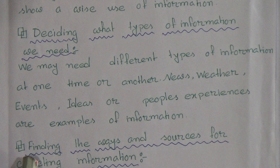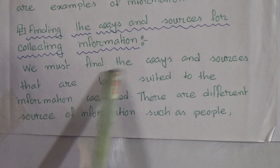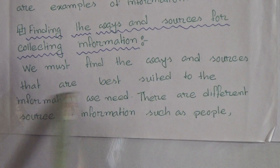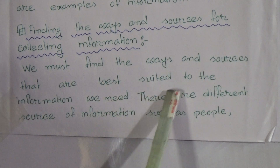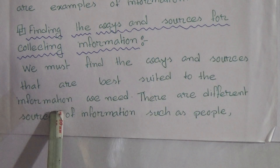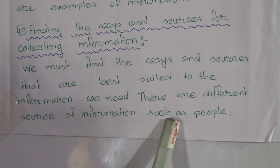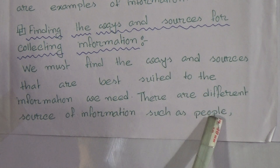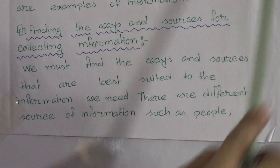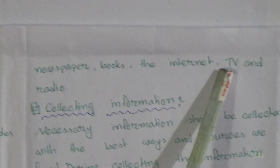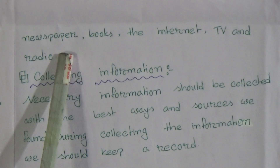Number 2: Finding the ways and sources for collecting information. We must find the ways and sources that are best suited to the information we need. There are different sources of information, such as people, newspaper, books, the internet, TV, and reading.